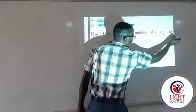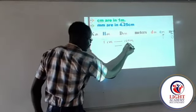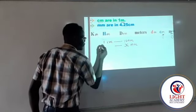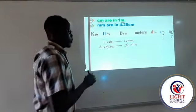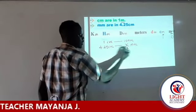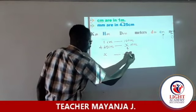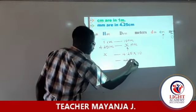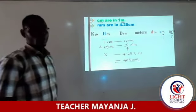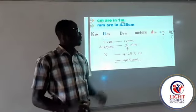The question is: how many millimeters are in 4.25 centimeters? What you do here — because we are looking for this as our unknown — we do cross-multiplication: X will be equal to 4.25 times 10. We have 42.5 millimeters in 4.25 centimeters.